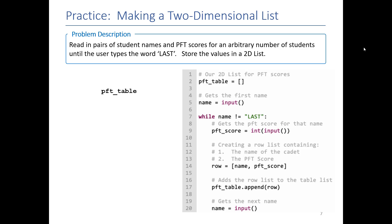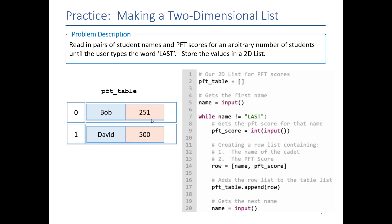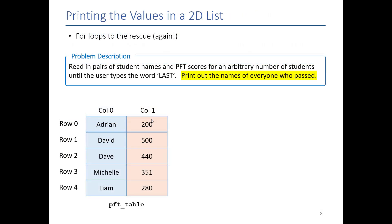If you're having trouble logically understanding what's going on, here's a quick animation of the code we wrote. Every time we get a PFT score and a name, we construct a new row with the name in the first column and the score in the second column, then append it to our PFT table. We repeat this for each name and score until done.